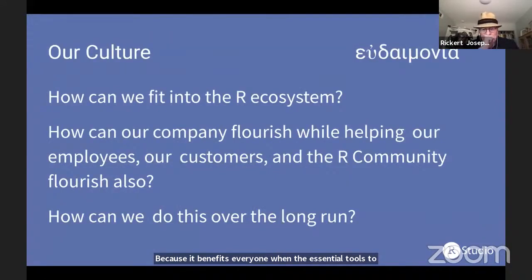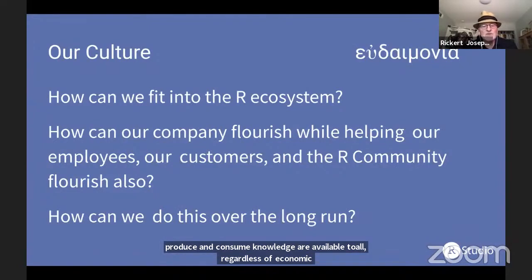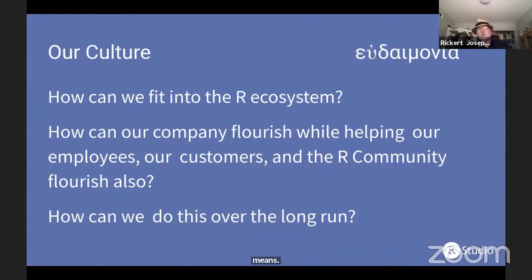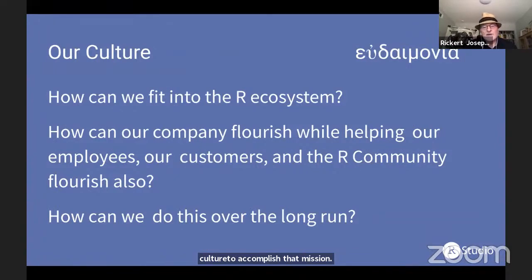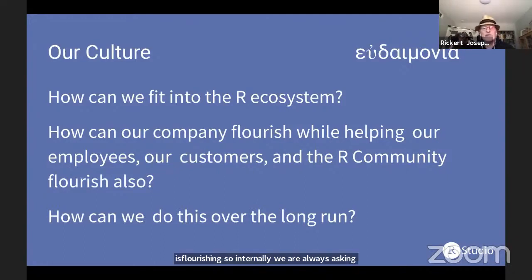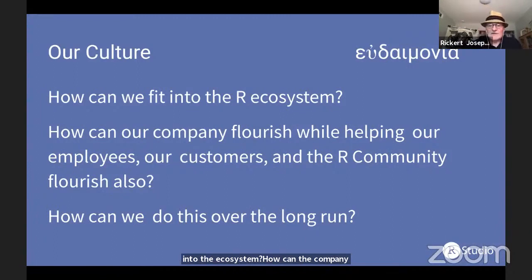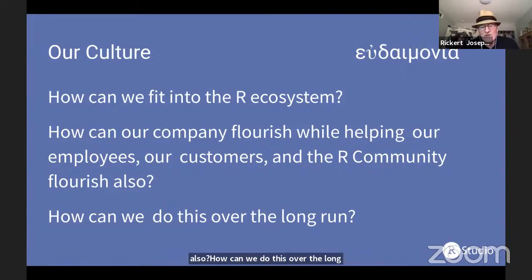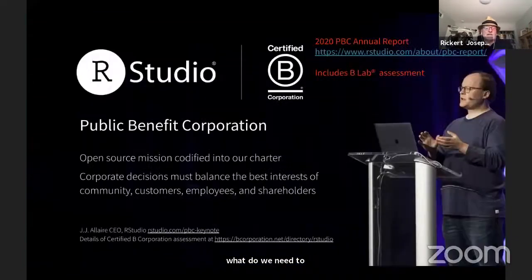We're trying to develop and sustain a culture to accomplish that mission. The one word that I think best characterizes what we do is the ancient Greek word 'eudaimonia' — flourishing. We're always internally asking ourselves: how can we fit into the R ecosystem, how can our company flourish while helping our employees, our customers, and the community flourish also, and how can we do this over the long run? Internally at RStudio we talk about being a hundred-year company. A significant step we took in 2019 was to become a Public Benefit Corporation.